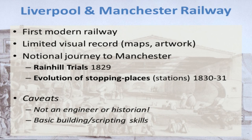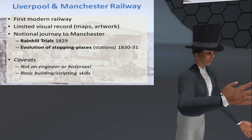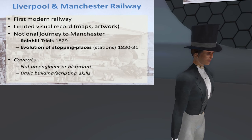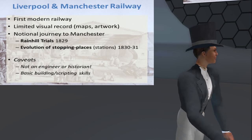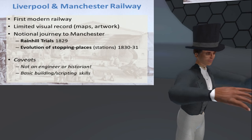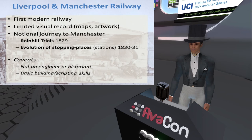On the other hand, its lifespan was actually quite short. It was so successful that the whole thing mushroomed, and the railway, although it still exists, was merged into much larger organisations. So there's a very limited visual record, simply because it lasted in its original form for such a short period of time. There are some maps, a few plans, and I'm going to be speaking mainly about artwork.